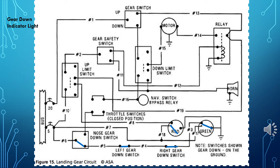The green gear down indicator light informs the pilot that all three landing gear are down and locked prior to landing. Each gear down switch will only close once its respective landing gear is down and locked, and all three landing gear must be down before the green gear down indicator light will illuminate. Once all three landing gear are down and locked, current will flow from the bus through the nose gear down switch, through the left gear down switch, and through the right gear down switch to the gear down indicator light.